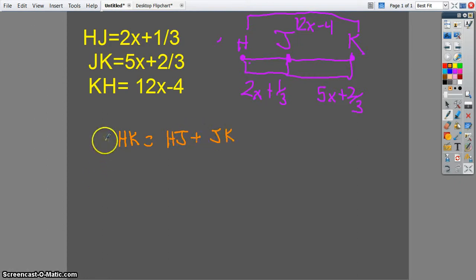So I'm going to write this out. I know that HK or KH is 12x minus 4. HJ is 2x plus 1 third. And JK is 5x plus 2 thirds. So draw your line there.